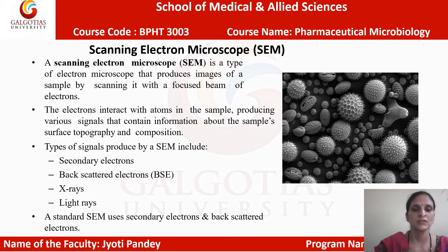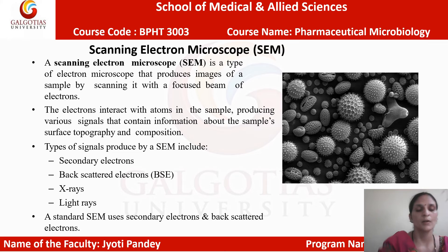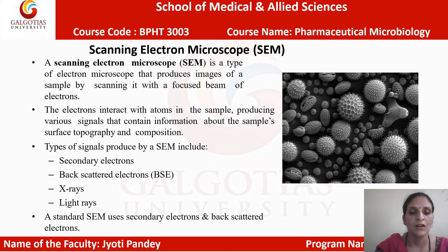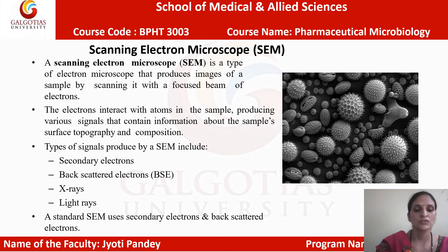Now comes another type of electron microscope, that is Scanning Electron Microscope. This microscope is used for the detection and determination of surface morphology of any kind of molecular particles which are micron or nanometer size. The electrons interact with atoms in a sample producing various signals that can be informative about the sample surface topography and composition. The types of signals produced by a SEM are secondary electrons, backscattered electrons, x-rays and light rays. A standard SEM uses secondary electrons and backscattered electrons.